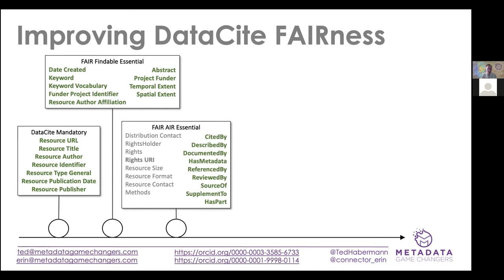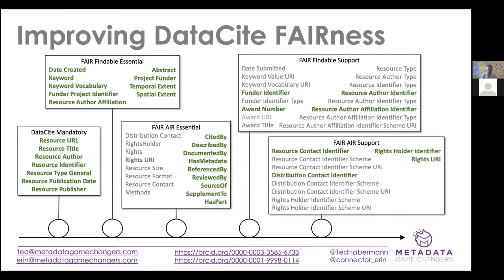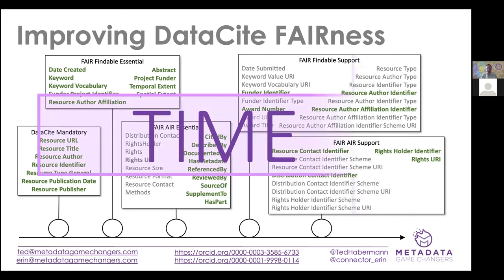Today we're talking about identifiers and connections. Most of the connections happen in the AIR part. These connections are really important, particularly for reuse — how datasets have been used in the past, who has used them, and what have they done with them. Is there other documentation for the datasets? Those kinds of connections contribute to reusability. The connections aren't known when a dataset is first published, so they get added as a function of time.